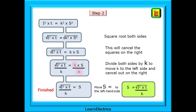Now move on to step 2: square root both sides. This will cancel the squares on the right-hand side, leaving the left-hand side as it is. Then divide both sides by K — this moves K to the left side and we can cancel the Ks on the right. There we have the finished formula with S on its own. Tidying up, S equals the square root of I squared times T, divided by K, as shown in the book.